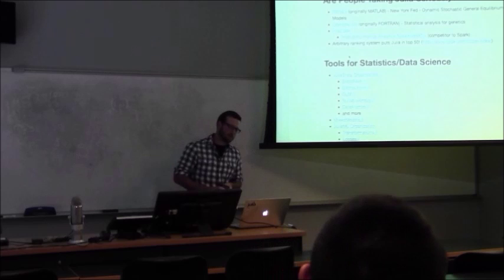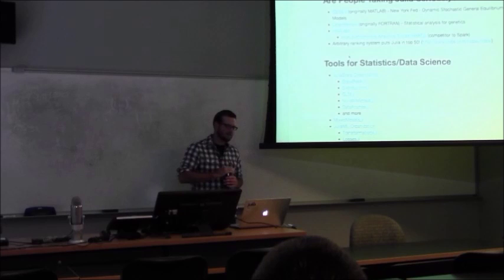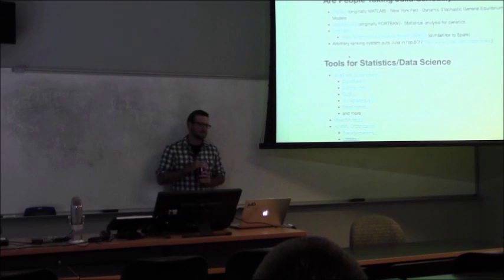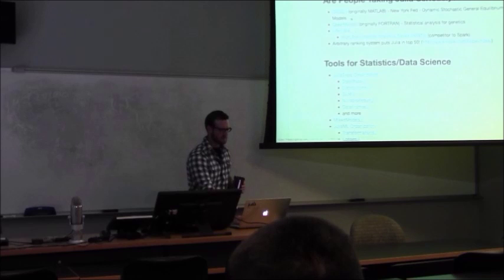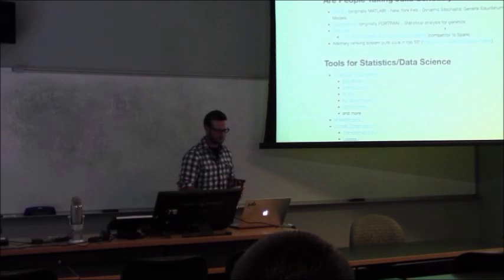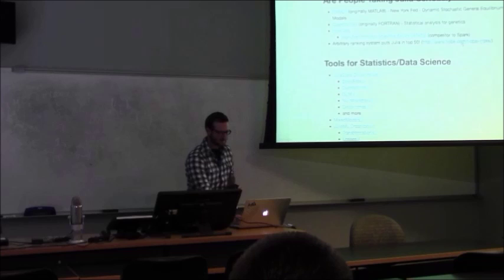Are people taking Julia seriously? The New York Fed had a very large MATLAB codebase for their dynamic stochastic general equilibrium model, which is now in Julia and open source. OpenMendel was originally 60 or 70,000 lines of Fortran and is now in the process of going into Julia - that's actually one of my advisor's projects doing statistical analysis tools for genetics. Intel Labs is working on HPAT, a competitor to Spark for distributed computing. And Julia recently entered the Tiobe Index top 50 at number 47.